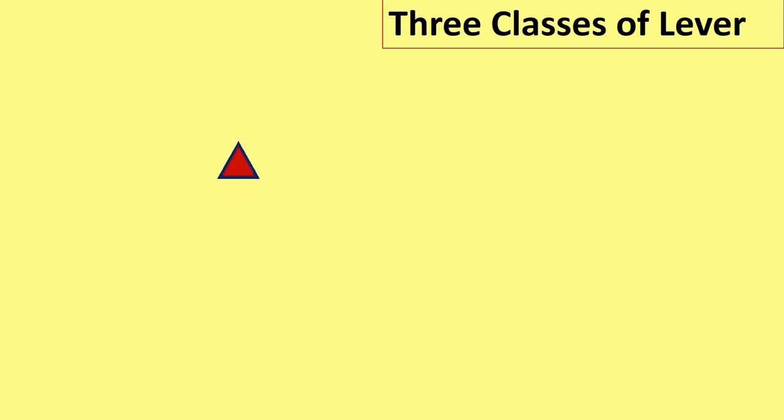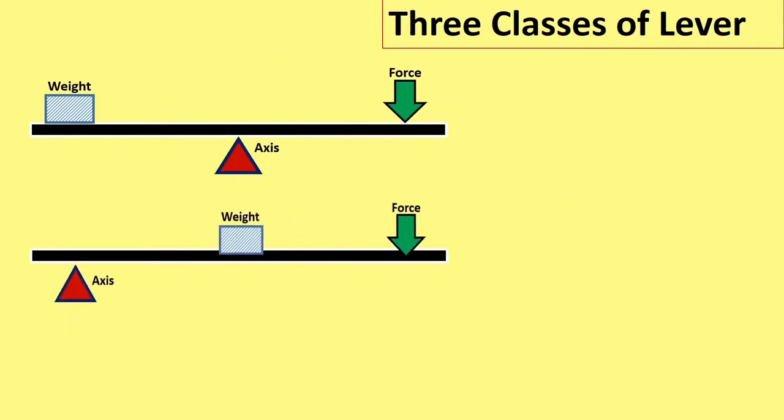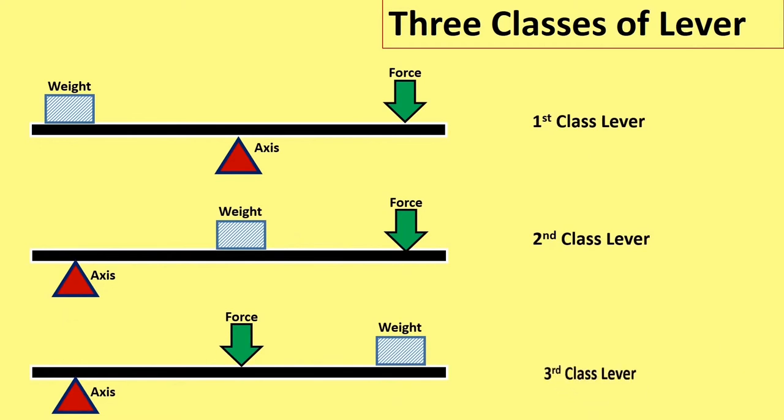There are three types of levers: first class, second class and third class. The difference between the three classes depends on where the axis is and where the weight is and where the force is placed.